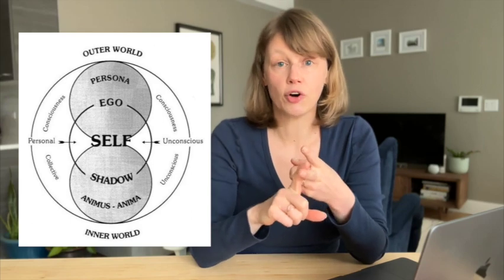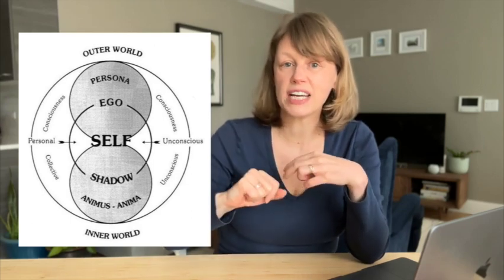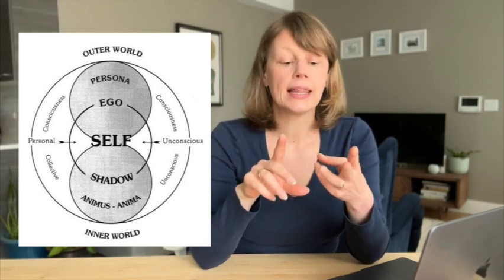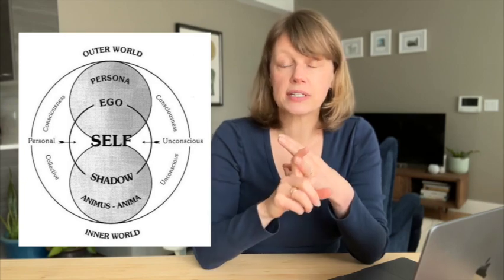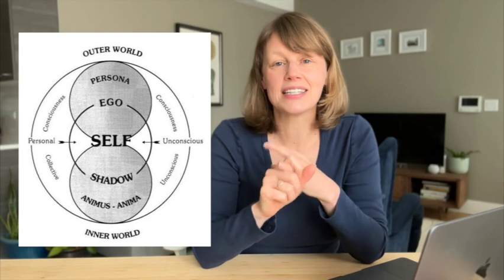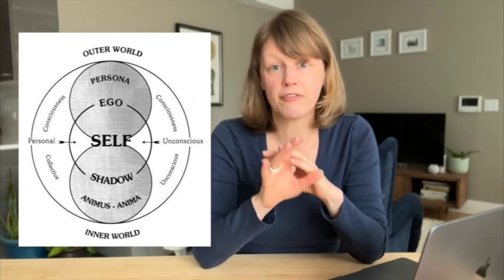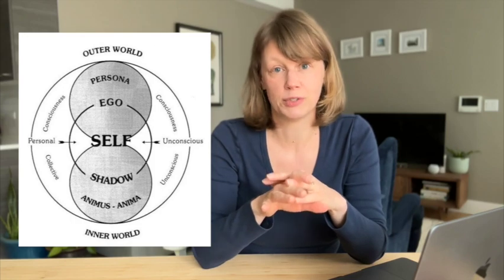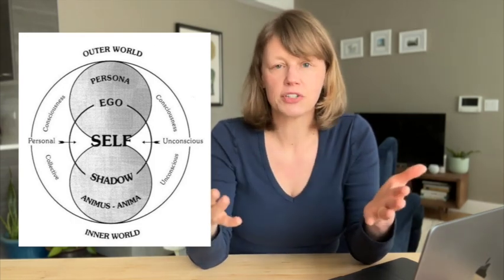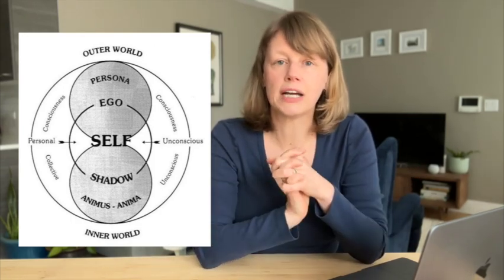Jung posits that your psyche contains different structures. Your ego is the center of your consciousness. Your personal unconscious is the stuff you suppress that you don't want to think about. Then the collective unconscious is a term he coined because he believed it's innately human — he observed that people all over the world have very similar dream symbols, which he called archetypes.